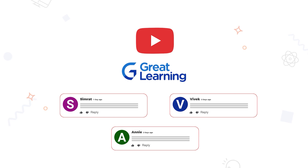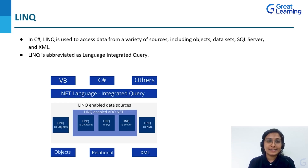LINQ in C# is used in order to access data from a variety of sources. It might be datasets, SQL servers, objects, or different sources. LINQ is generally used in order to access data which has been distributed widely.